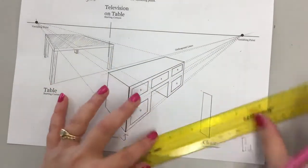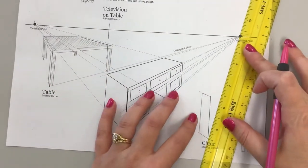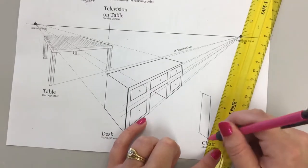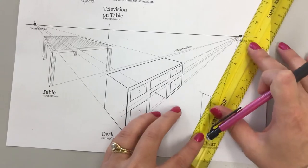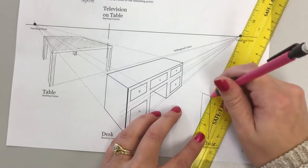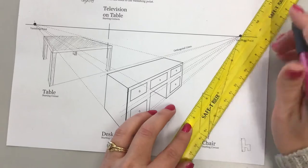Alright, then I'm going to take the bottom of this out to my vanishing point. I'm going to take the top out to my vanishing point, and then this part out.